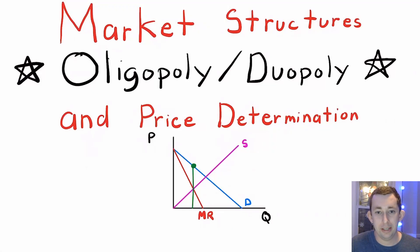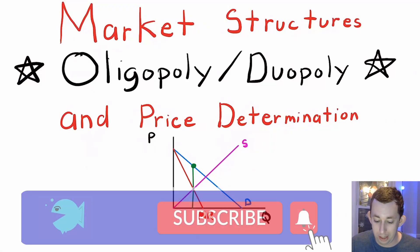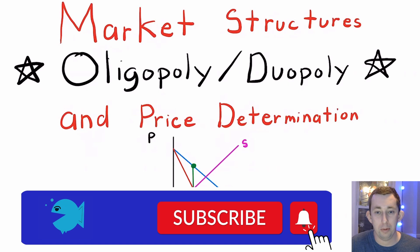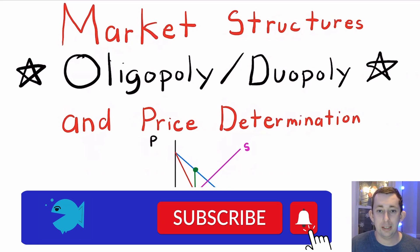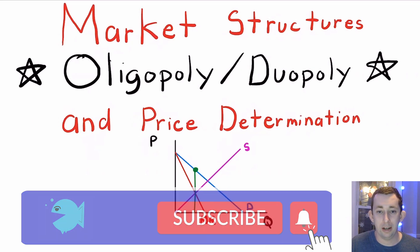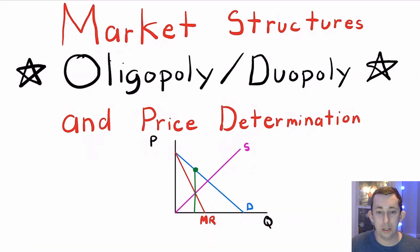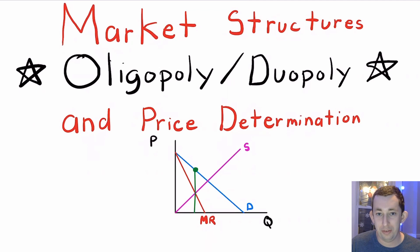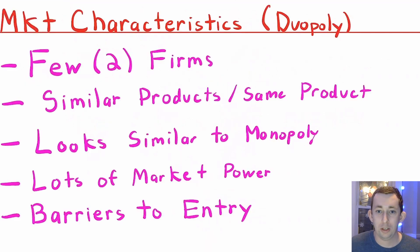Hi guys, welcome back to In Case of Econ Struggles and welcome to another Market Structure Struggle. Today we're talking about an oligopoly slash duopoly market and price determination in an oligopoly or a duopoly market. Timestamps are below if you would like to jump around, but let's get right into it.